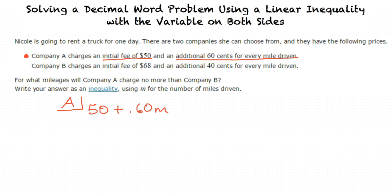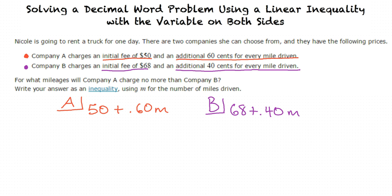Now we will write an expression for the charge of Company B. Using the given information, there is an initial fee of $68 and an additional $0.40 for every mile driven. So if we follow the same steps as before, the expression should be 68 plus 0.40M.